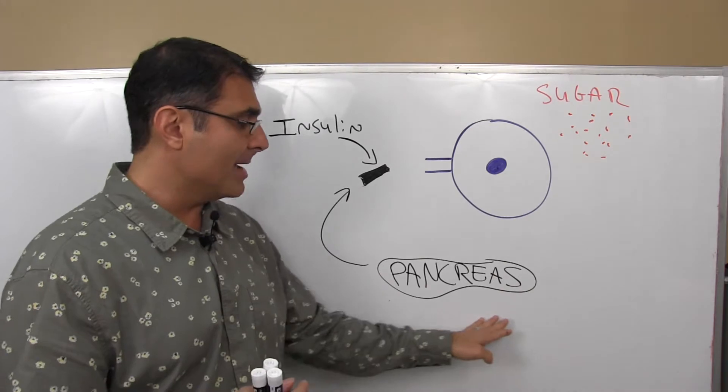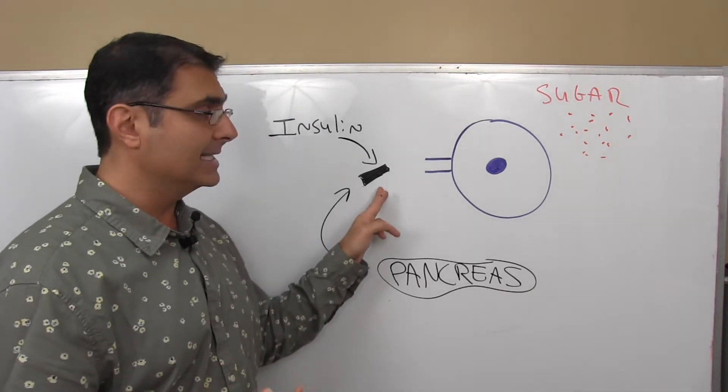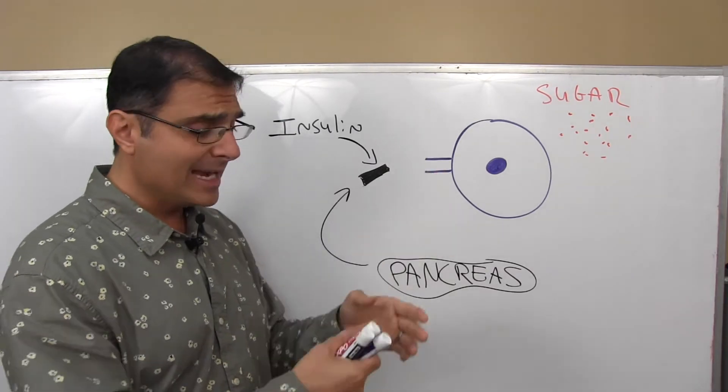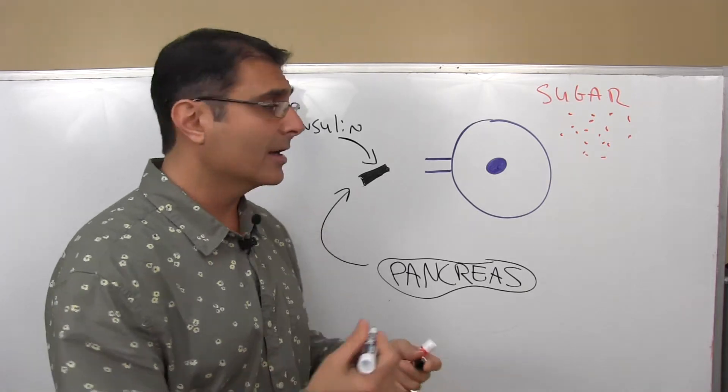That then sends a message to your pancreas. Your pancreas releases a hormone called insulin. Insulin travels through the blood, and it plugs into a receptor just like a key fits into a lock.